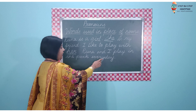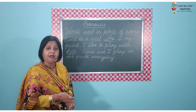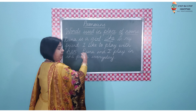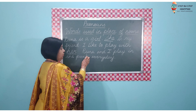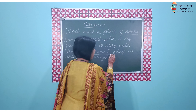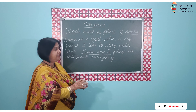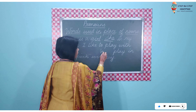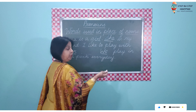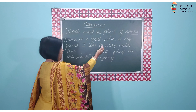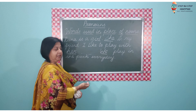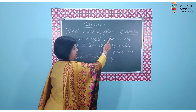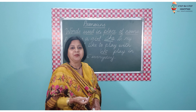Rina and I play in the park every day — again I'm using the word Rina, and I'm already talking about Rina. So instead of saying Rina and I, we can simply use the word 'we'. We play in the park every day. 'We' is plural; 'she' and 'her' were singular. So these words that we use in place of nouns are called pronouns.